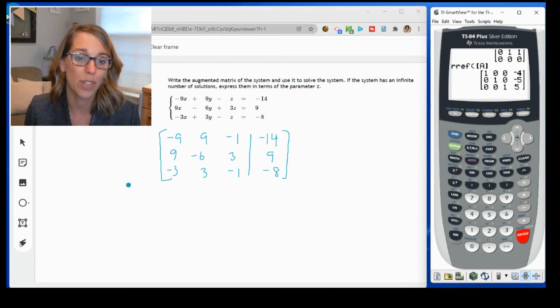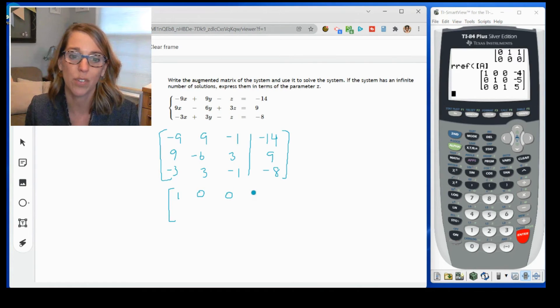So what I get is reduced row echelon form. Notice those ones down the diagonal. The coefficients are 1, 0, 0, negative 4, 0, 1, 0, negative 5, 0, 0, 1, and then 5.